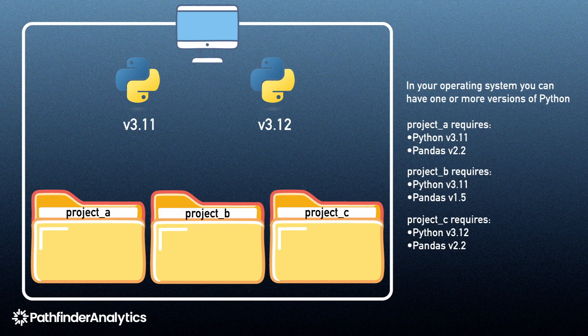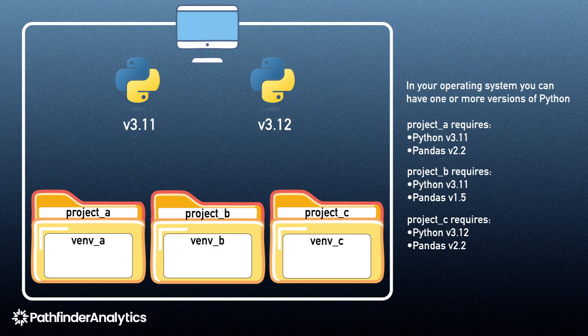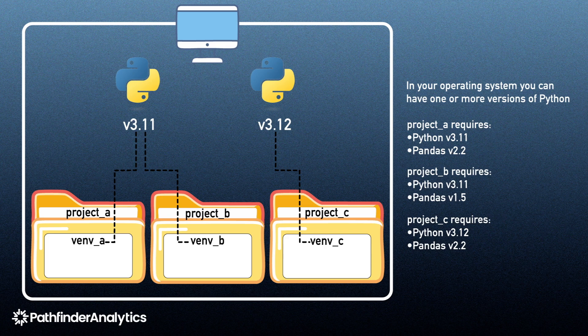Your virtual environments must reference a specific Python interpreter. We can create three virtual environments — venv-a, venv-b, and venv-c — each contained within their project. Venv-a and venv-b reference Python version 3.11, and venv-c references Python version 3.12. Any packages we install in the virtual environments will be isolated. We can install pandas version 2.2 in venv-a and venv-c, and pandas version 1.5 in venv-b.